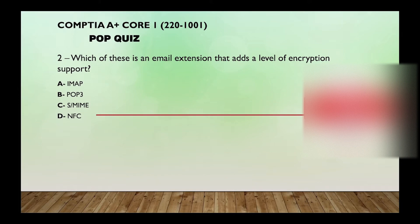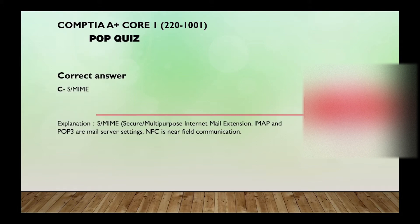Number two: which of these is an email extension that has a level of encryption support — IMAP, POP3, S/MIME, or NFC? The correct answer is S/MIME. S/MIME stands for Secure Multipurpose Internet Mail Extension. IMAP and POP3 are mail server settings, and NFC is only for communication, so the correct answer is S/MIME.